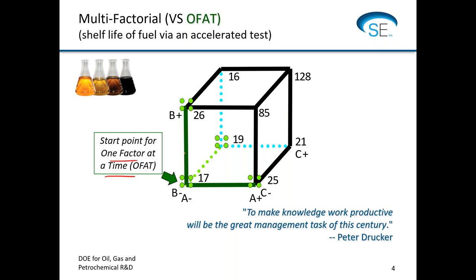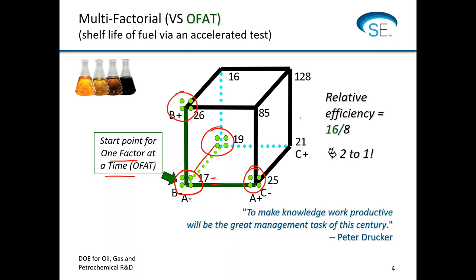The OFAT experimenter might say sample size one is probably not good, so if I redo this experiment I'd do four at baseline generating an average of 17, then four at the high level of A — giving a four-by-four comparison. But then what about B? We'd have to do four at the high level of B also. And then there's a third factor C. By the time we're done with OFAT, we've got 16 runs to get that four-by-four power, whereas with the two-level design — the multi-factor approach — we only have eight. So in addition to effectiveness at seeing interactions, it's also more efficient.